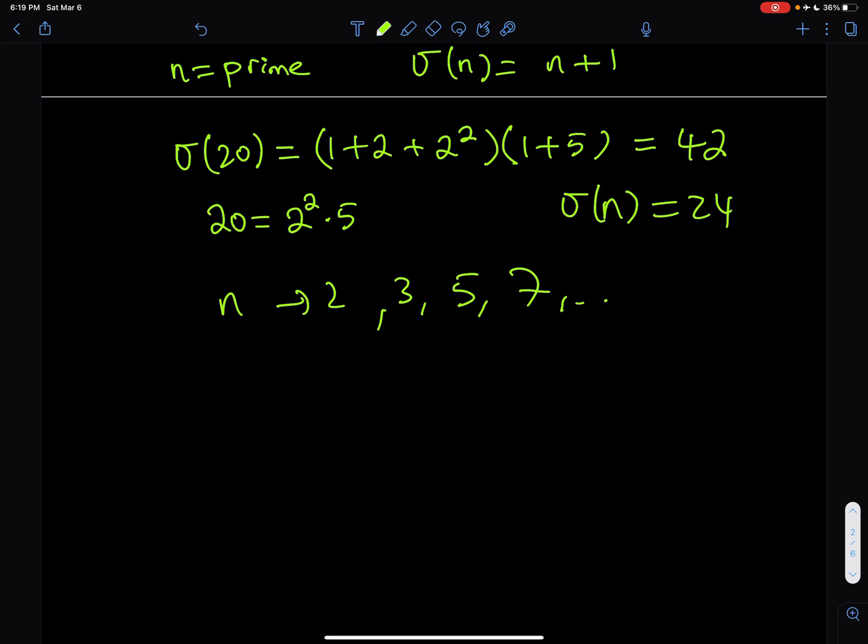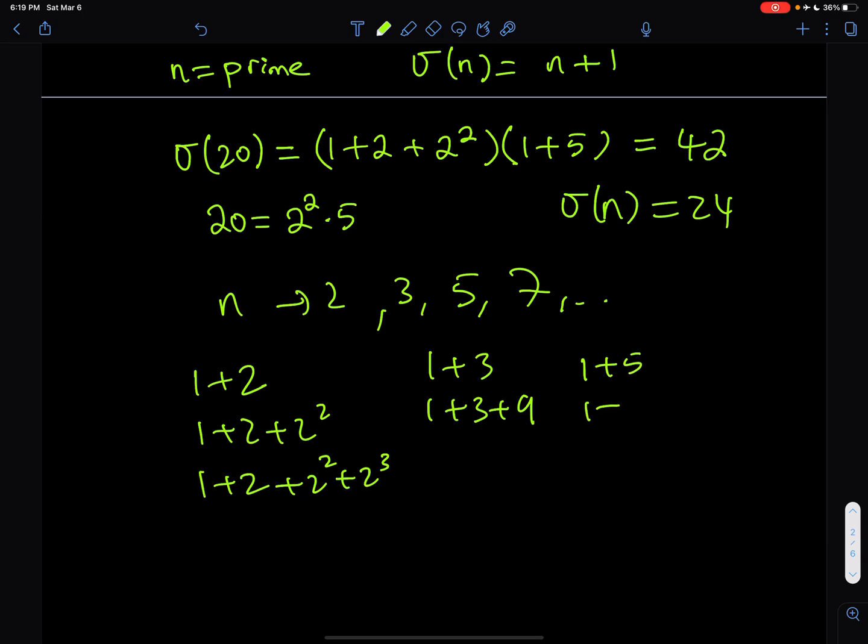For example, you can have something like 1 plus 2 in the sigma, so it could be one of the factors, or it could be 1 plus 2 plus 2 squared, or it could be something like 1 plus 2 plus 2 squared plus 2 to the third power, or it could be something like 1 plus 3, or 1 plus 3 plus 9, which is 3 to the second power, or it could be something like 1 plus 5, or 1 plus 5 plus 25. Now, notice that all these give you different numbers. This will give you a 3, this will give you a 7, this will give you a 15, this will give you a 4, and this will give you a 13, and this will give you a 6, and this will give you a 31. Obviously 31 is way too large.